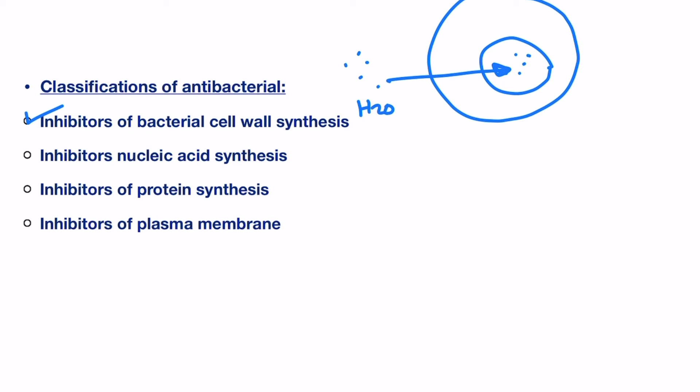Second class is the inhibitors of nucleic acid synthesis. This includes sulfonamides, quinolones, and trimethoprim. They target the nucleic acid of the bacterial cell. Third, we have the inhibitors of protein synthesis. Agents like these target the process of making essential proteins and enzymes required for cell survival. Without these proteins, the bacteria cell won't be able to survive and will be destroyed.